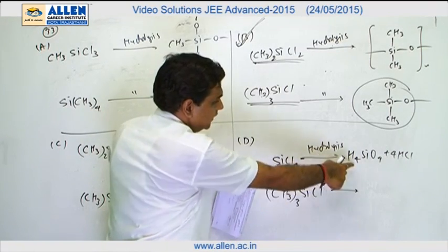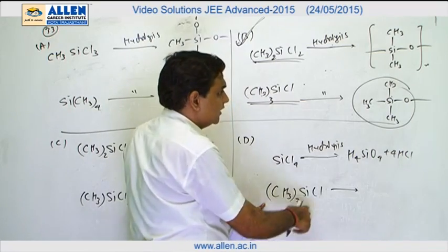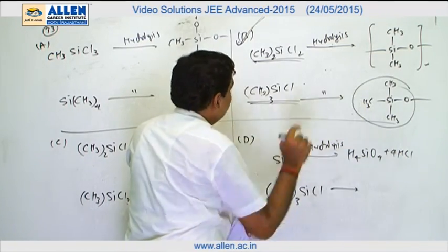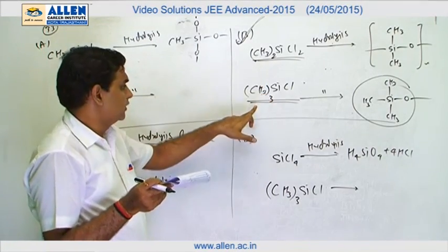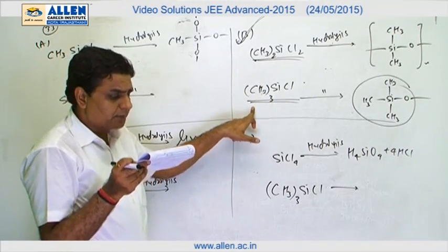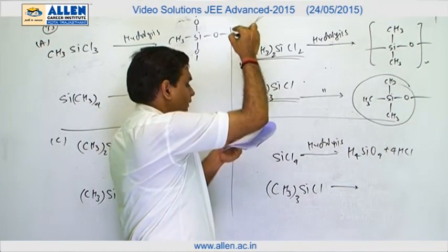Option D: SiCl4 hydrolysis produces silicic acid and HCl. And CH3SiCl is the same chain termination unit as in option B. But option B contains chain formation unit and chain termination unit both. As per the language of question, answer number 33 is B.